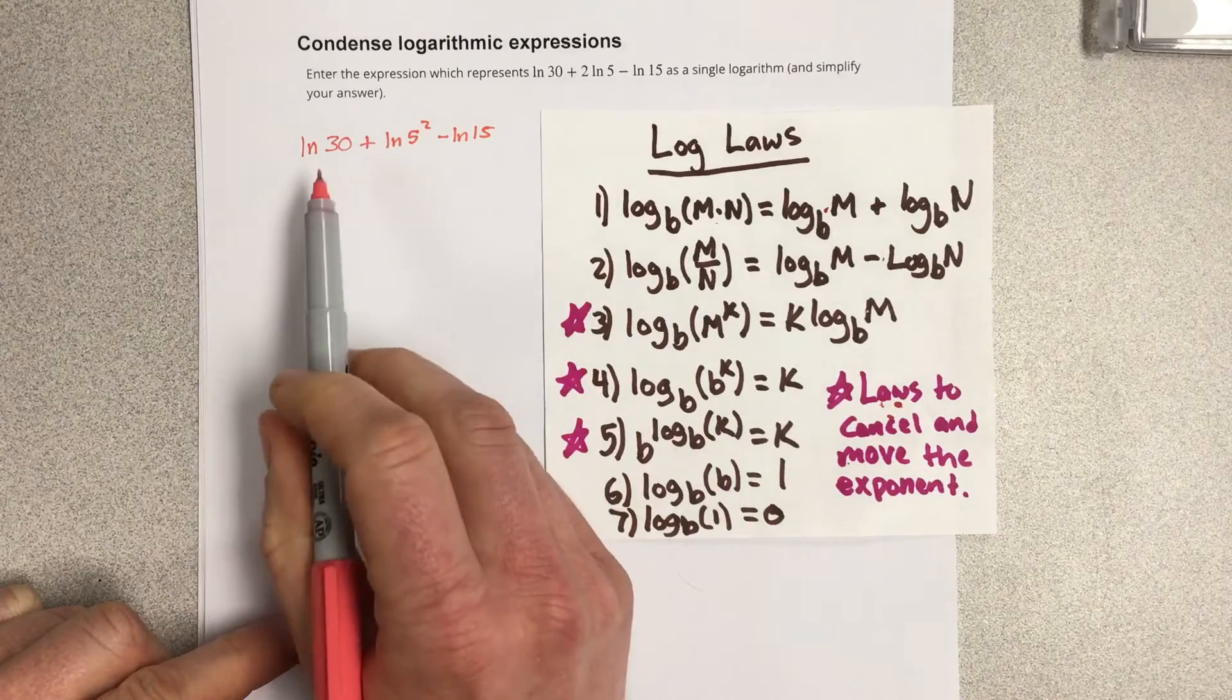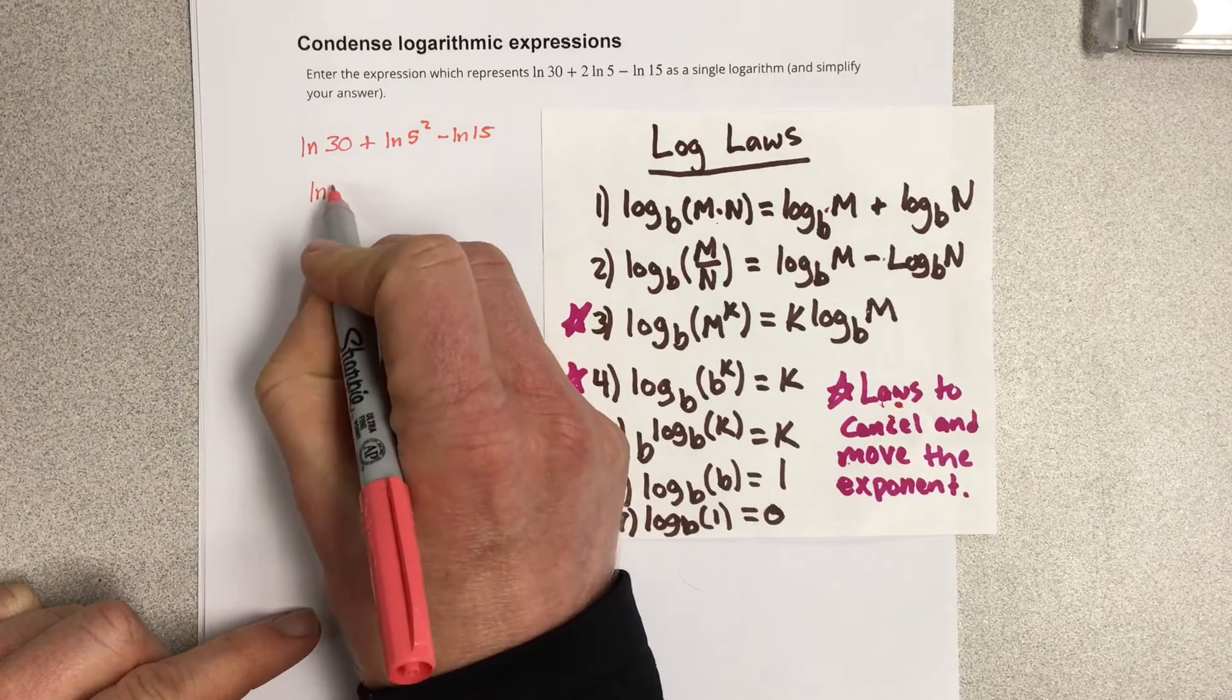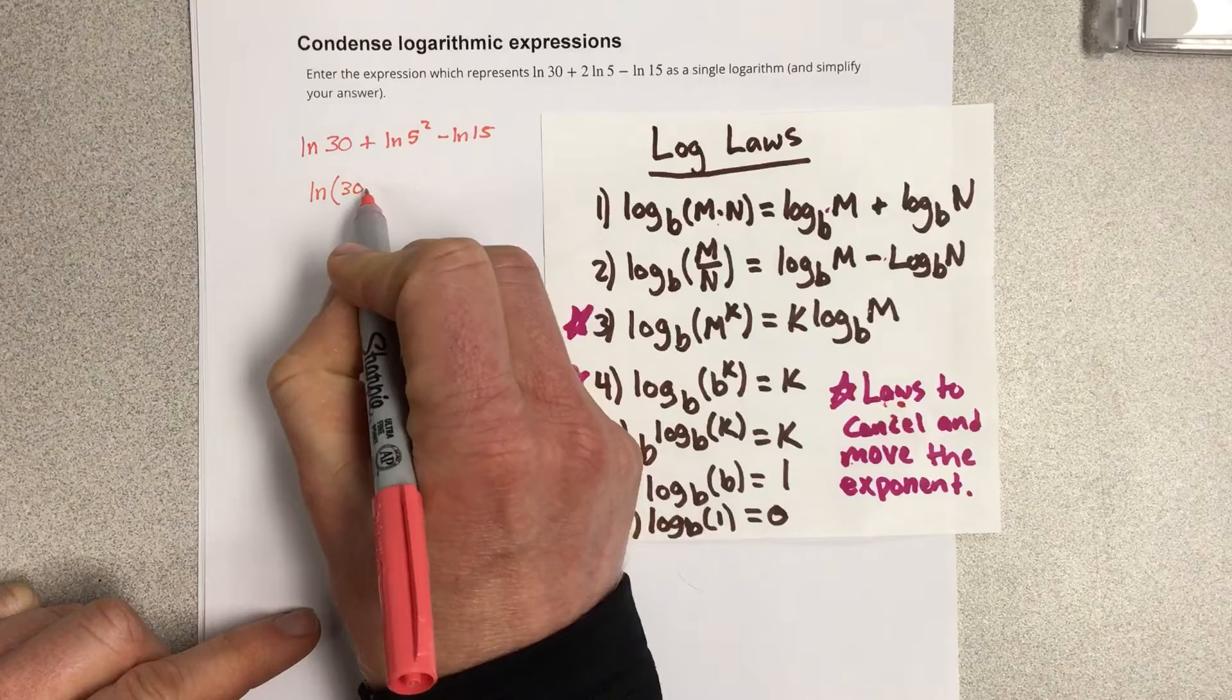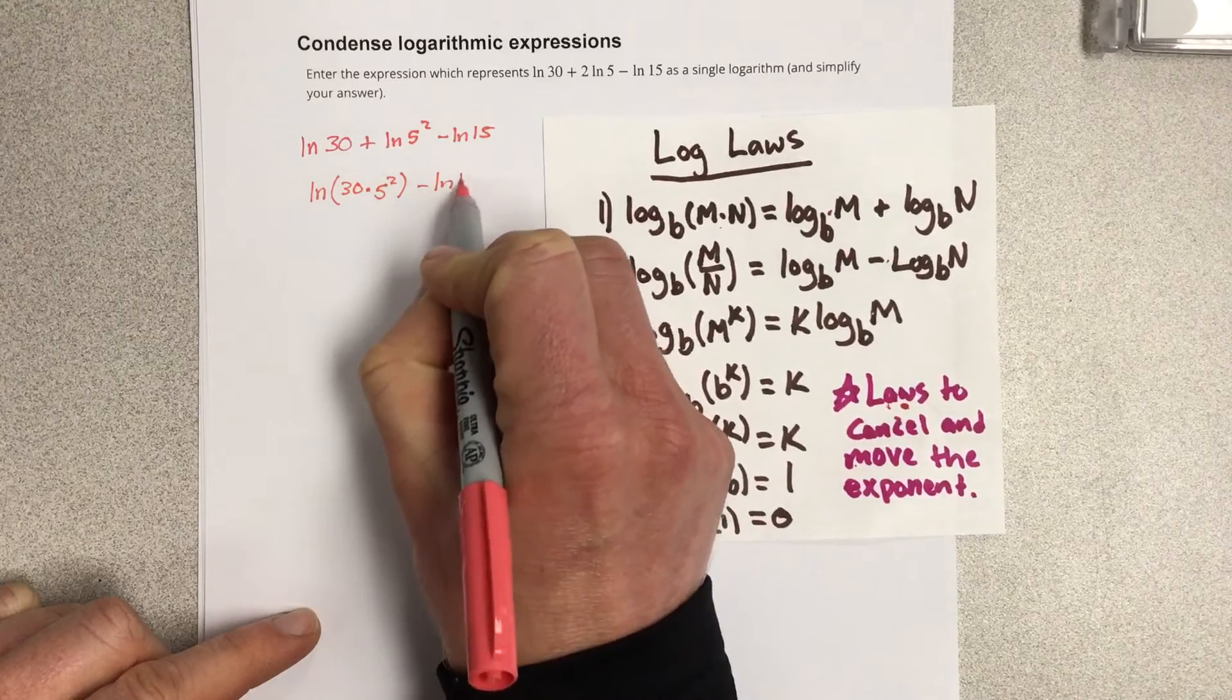And then we're going to use the product rule and combine these together. So we have natural log of 30 times 5 squared minus natural log 15.